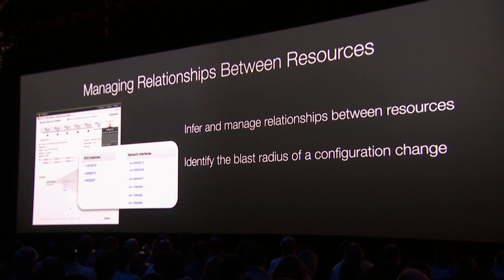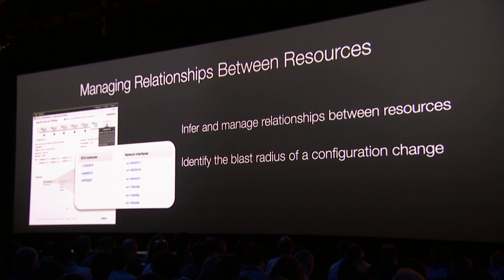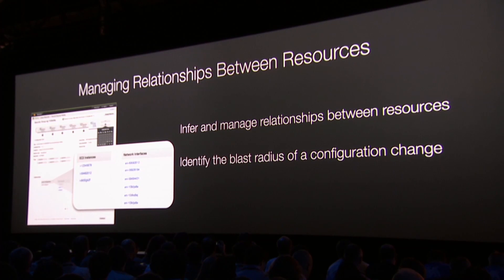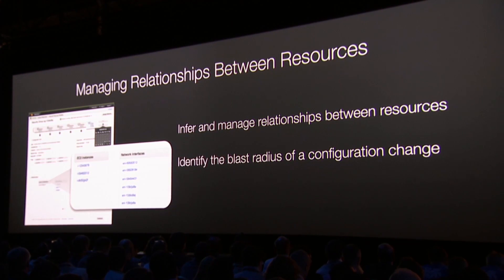It allows you to understand the relationships between all those resources and the dependencies. One of the challenges we all have is when we make changes — say we're going to change security groups — what's the blast radius of that change? What might be impacted? Oftentimes we find that out after we've made the change. AWS Config allows you to know that before you make that change.